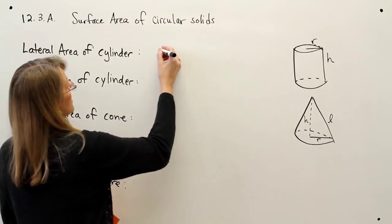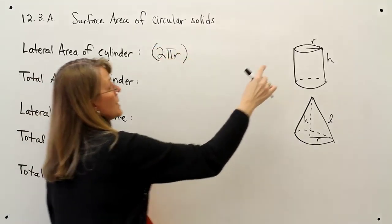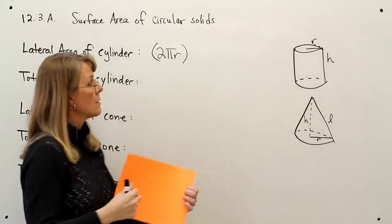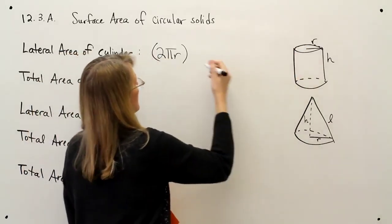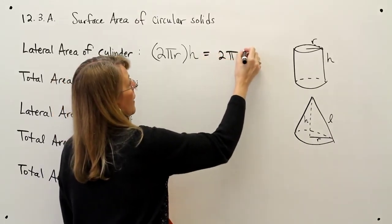So the lateral area of a cylinder is 2πrh. That represents this edge, this circumference, and then the other side of the rectangle is represented by h, or we just say 2πrh.